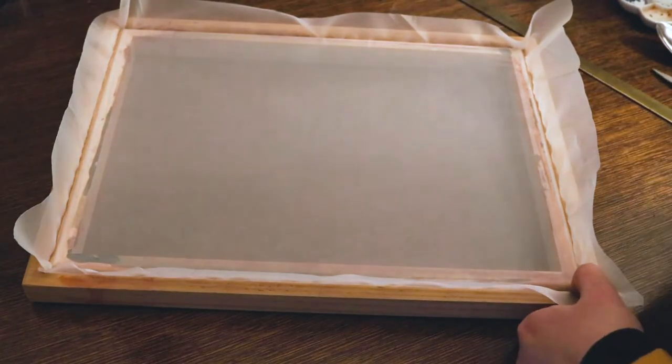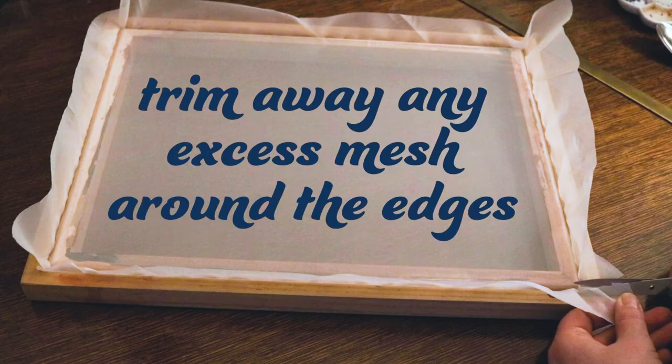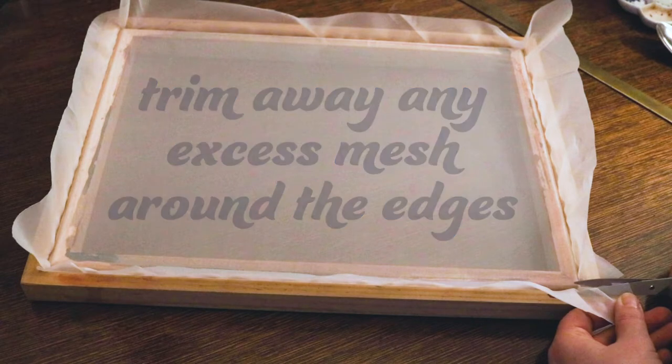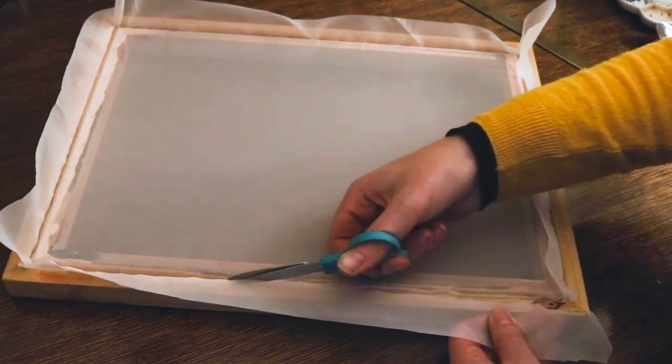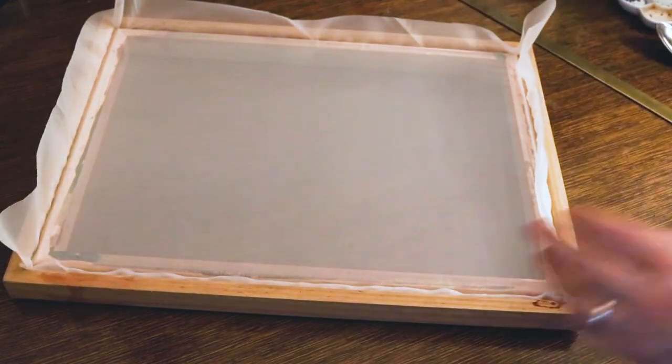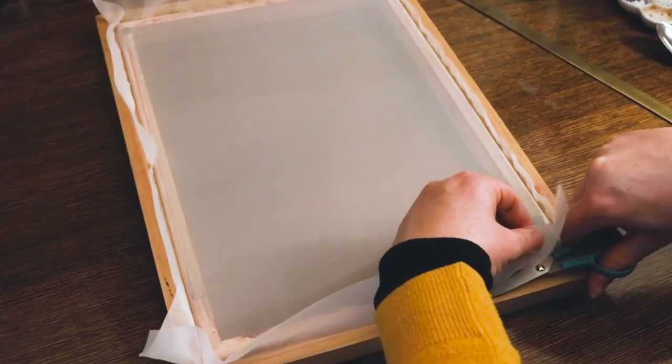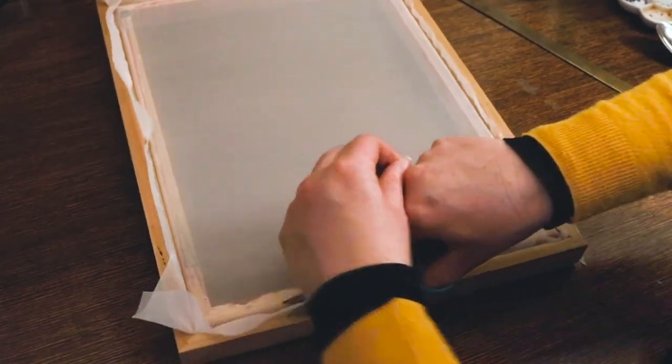When choosing your mesh for the frame, there are a few different options available and what you choose will depend on what you want to print. These Speedball kit screens are stretched with a 40/40 mesh straight out of the box, which is fairly open and perfect for printing fabric and basic designs that don't have a lot of fine detail.